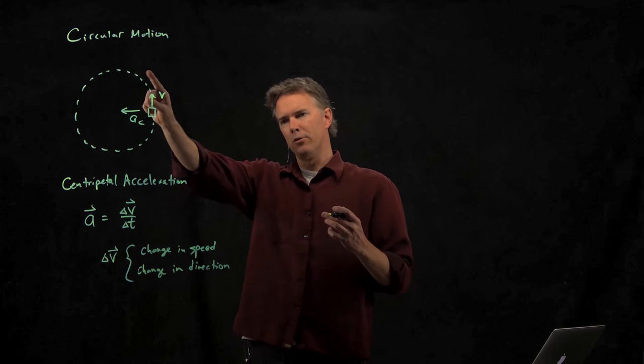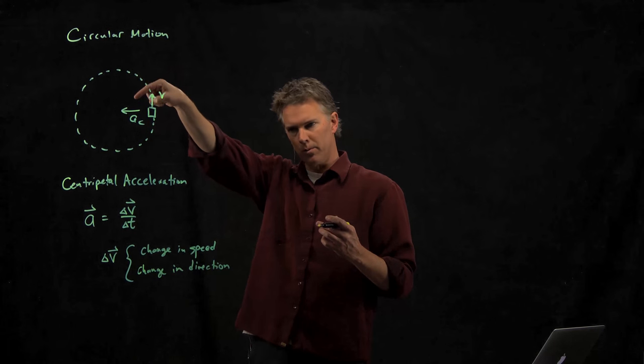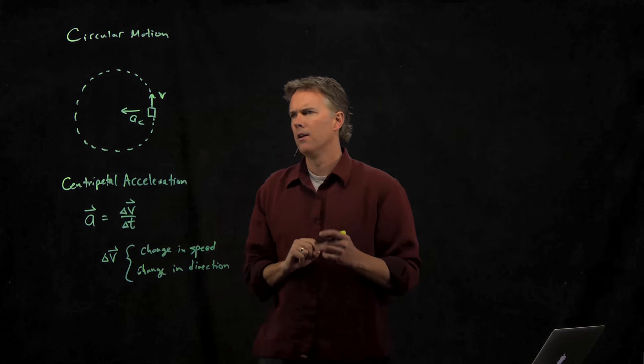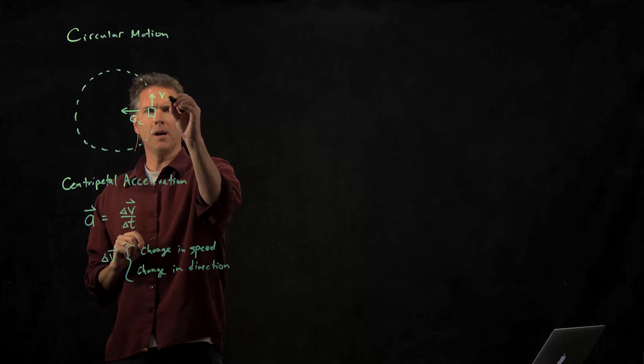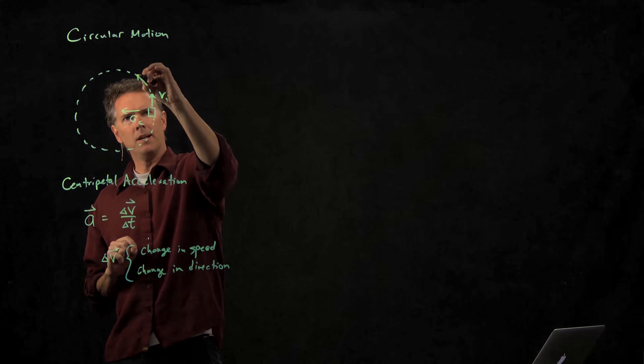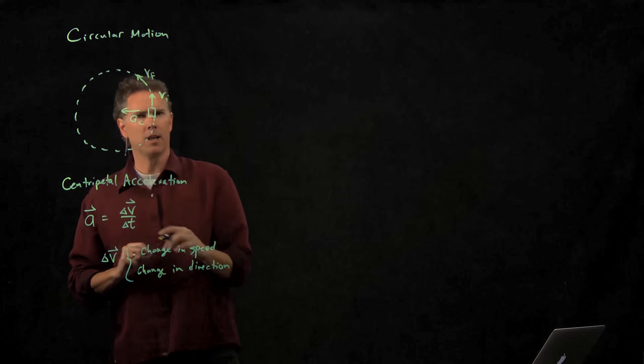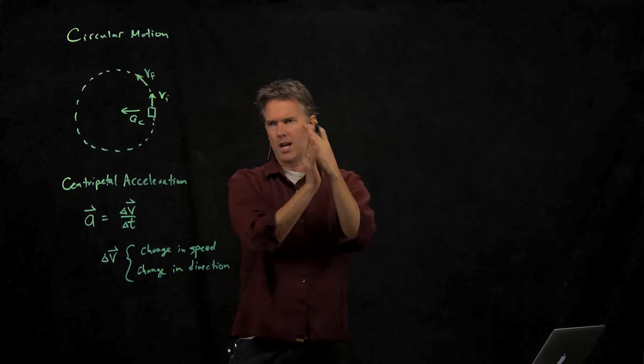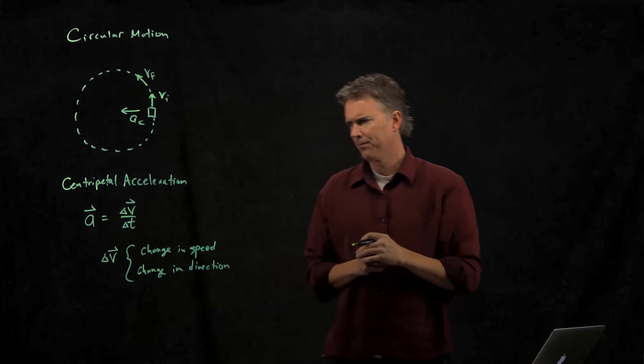In this case, even if we're not changing speed, we are changing direction as we go. Because if vi is right there, at some later time, vf would look like that, it certainly has changed direction.